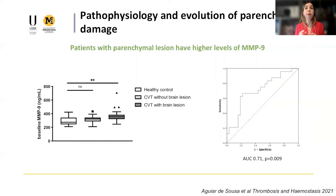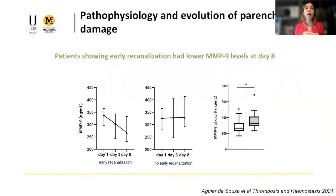We also have biomarker data suggesting recanalization is a relevant mechanism affecting brain damage. For example, circulating levels of MMP-9 — a marker of blood-brain barrier disruption — are increased in patients with brain lesions associated with CVT. Even more importantly, levels of this marker decrease rapidly in patients with early recanalization, but patients with persistent occlusion maintain persistently high levels of MMP-9. This suggests that MMP-9 as a marker of blood-brain barrier disruption is rapidly susceptible to improvements in venous hemodynamics related to venous recanalization, supporting this as a possibly relevant mechanism affecting the pathological processes in CVT.